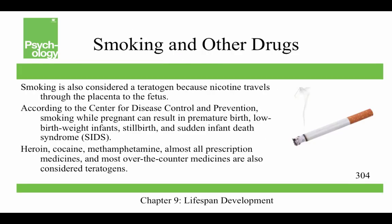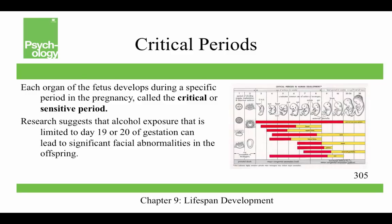Smoking is considered a teratogen because nicotine travels through the placenta to the fetus. According to the CDC, smoking while pregnant can result in premature birth, low birth weight, stillbirth, and SIDS. Heroin, cocaine, methamphetamine, and almost all prescription and over-the-counter medicines are also considered teratogens. Each organ the fetus develops during a specific period in pregnancy — called a critical or sensitive period — and research suggests alcohol exposure limited to day 19 or 20 can lead to significant facial abnormalities.